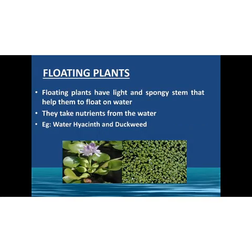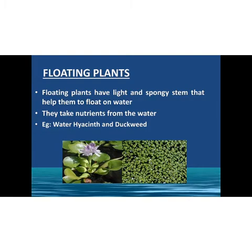Floating plants. How can some plants float on water? These plants have a light and spongy stem that helps them to float on water. That means they have air-filled spaces or cavities which help them to float. The roots are not fixed in these plants, so they get the nutrients from the water. Examples are water hyacinth and duckweed.